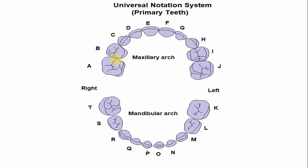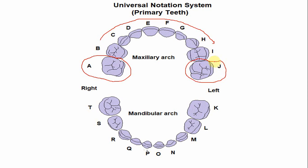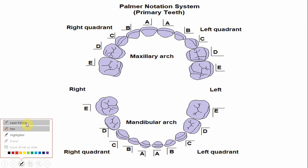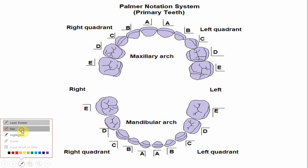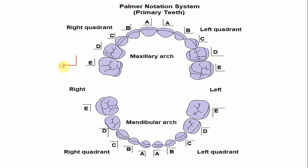In the universal notation, the right maxillary second molar is letter A, and continuing clockwise, the left maxillary second molar is letter J. In the Palmer notation system, the alphabet is the same — E — for both right and left maxillary second molar. The difference is the symbol: one symbol indicates the maxillary arch right quadrant, and the other indicates the maxillary arch left quadrant.